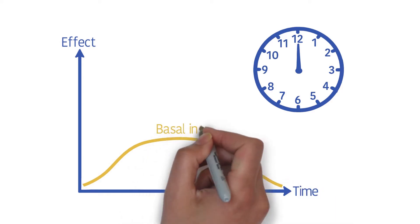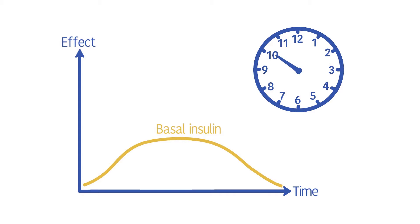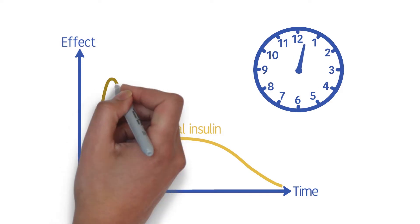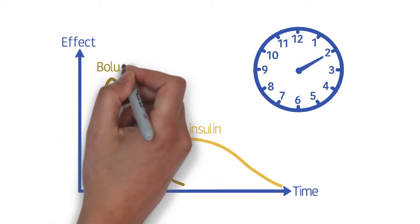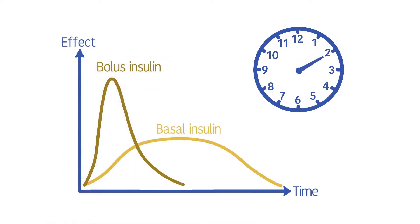Basal insulin controls blood sugar levels between meals and throughout the night. It includes intermediate and long-acting insulins. Bolus insulin is used right before eating. It includes fast, rapid, and short-acting insulins.